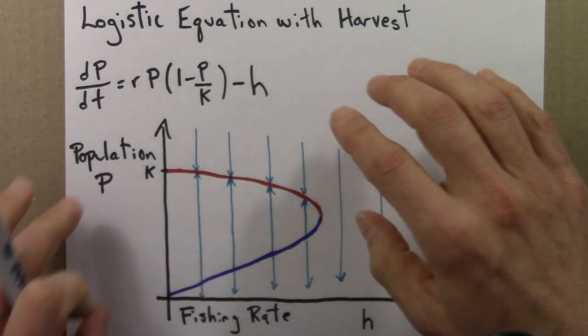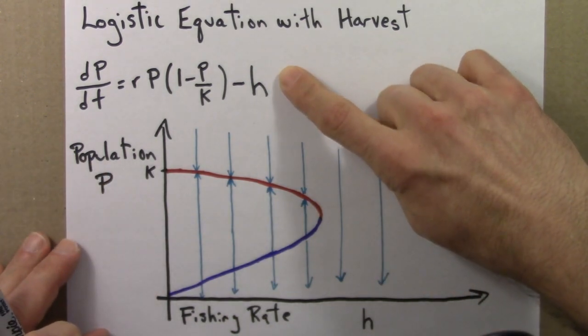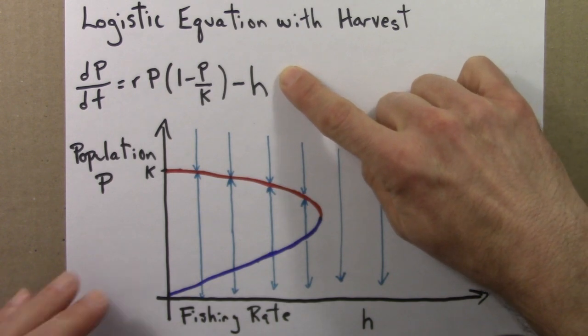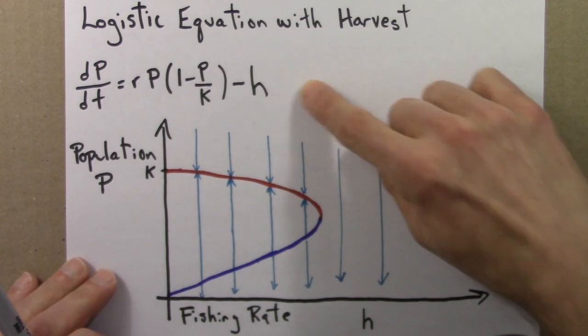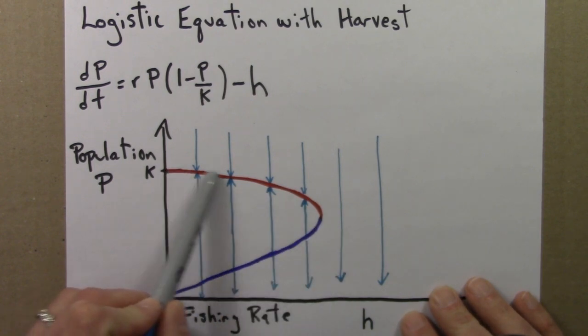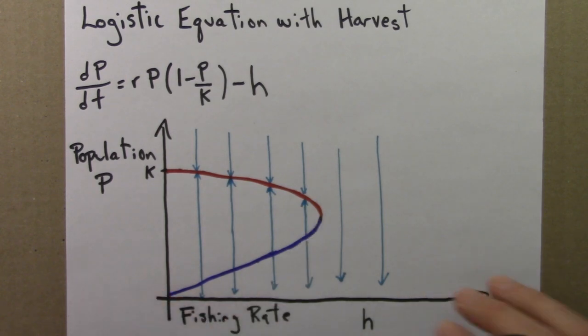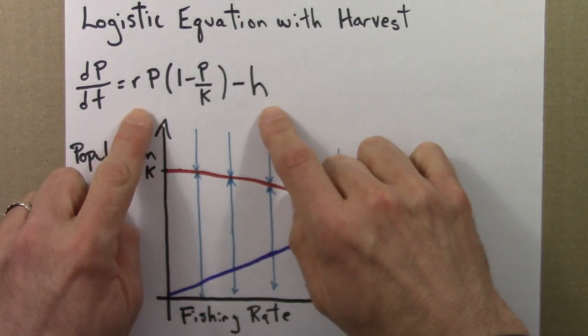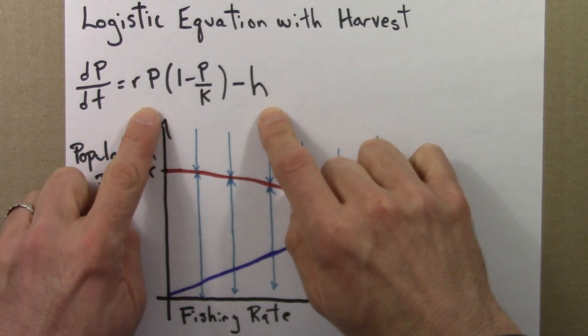So again, I don't think people actually use these models in a numerical way to understand how fisheries behave. But this does suggest that you can have a sudden collapse, that a stable point can disappear suddenly and without warning. And it turns out that that's a fairly generic feature of differential equations, even ones that are smooth and continuous, like this one.